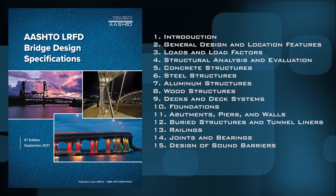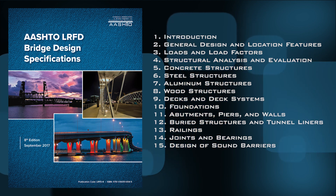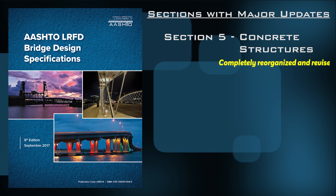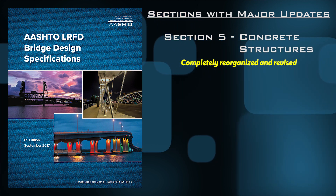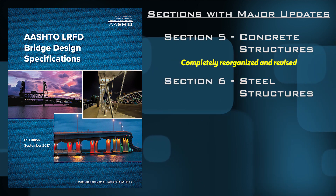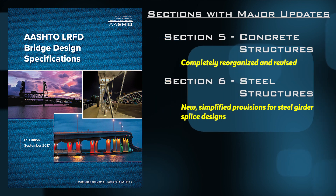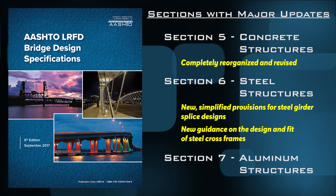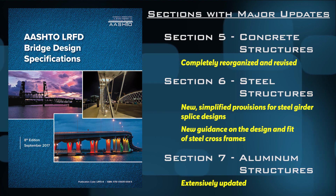Updates and revisions were made in almost all of the publication's 15 sections. The most significant changes include Section 5, Concrete Structures, which has been completely reorganized and revised after a multi-year effort; Section 6, Steel Structures, which has been updated to include new simplified provisions for steel girder splice design and new guidance on the design and fit of steel cross frames; and Section 7, Aluminum Structures, which has also been extensively updated.